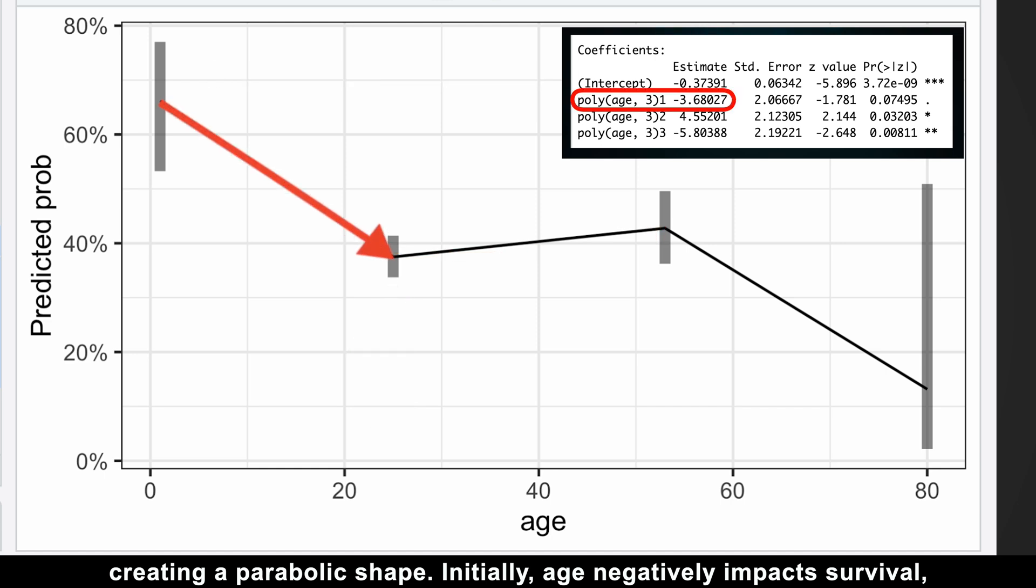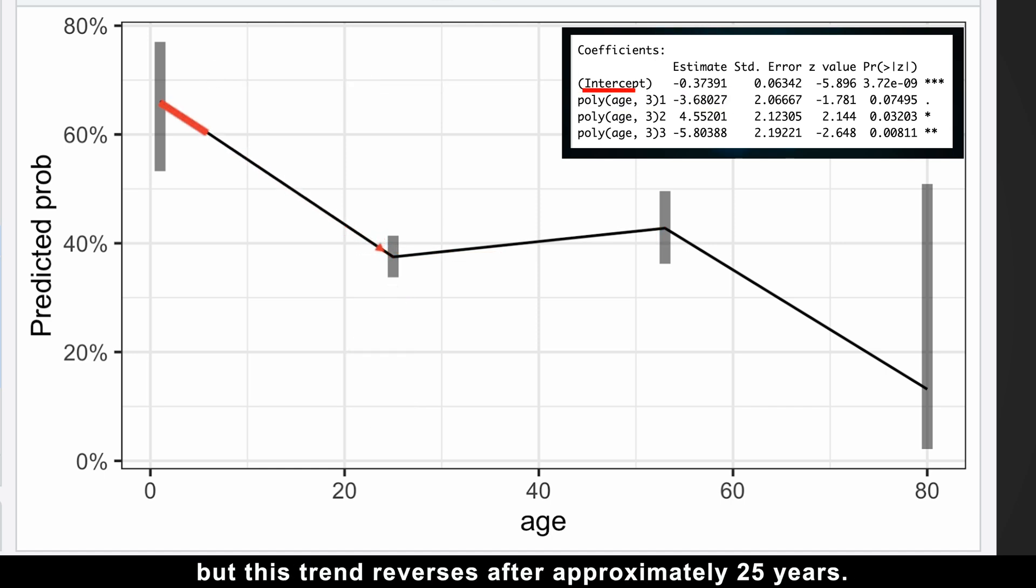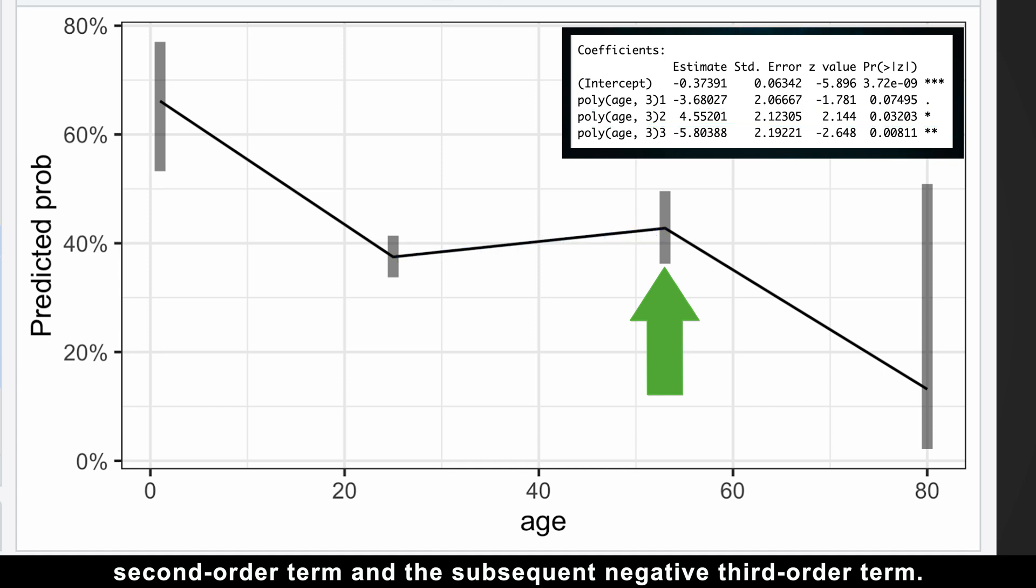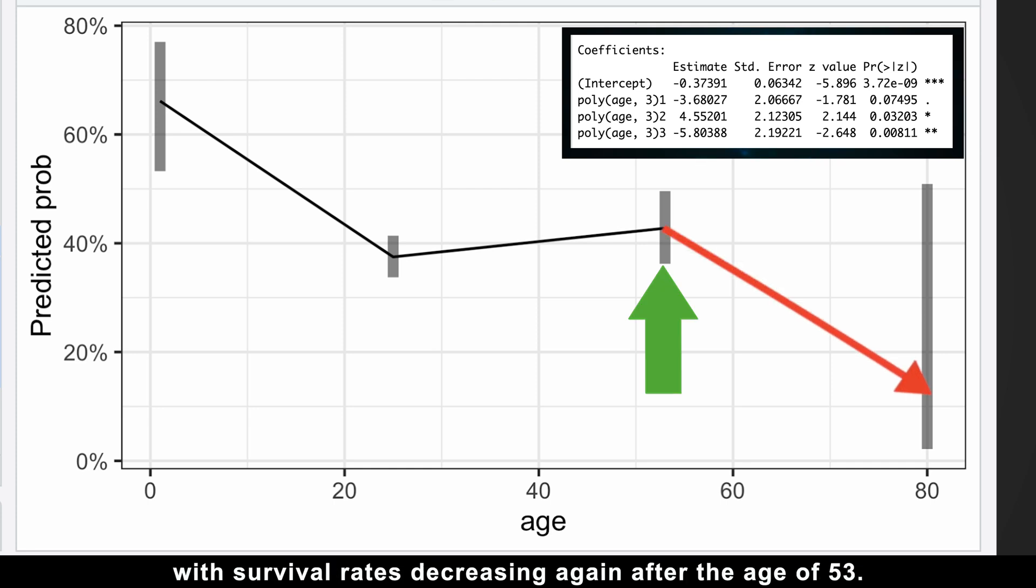The emmip function from the emmeans package is ideal for this purpose. The first turning point arises from the interaction between the negative first order and positive second order terms, creating a parabolic shape. Initially, age negatively impacts survival, but this trend reverses after approximately 25 years.